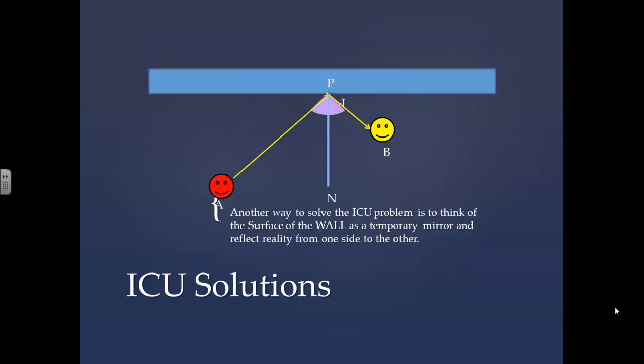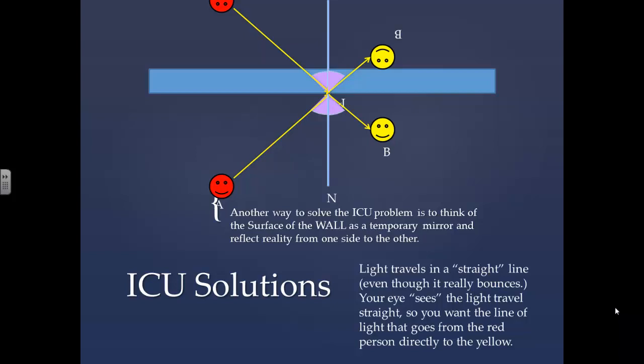Another way to solve the ICU problem is to think of the surface of the wall as a temporary mirror and to reflect reality from one side to the other. Light travels in straight lines, even though it really bounces. Your eye sees the light travel straight, so you want the line of light that goes from the red person directly to the yellow person.